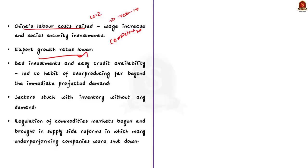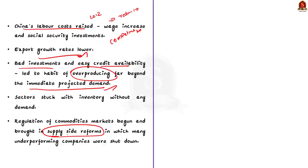The third challenge is overproduction and inventory glut. Some sectors like housing, energy, and construction engaged in production beyond their immediate demand. This led to excess inventory and economic inefficiencies.